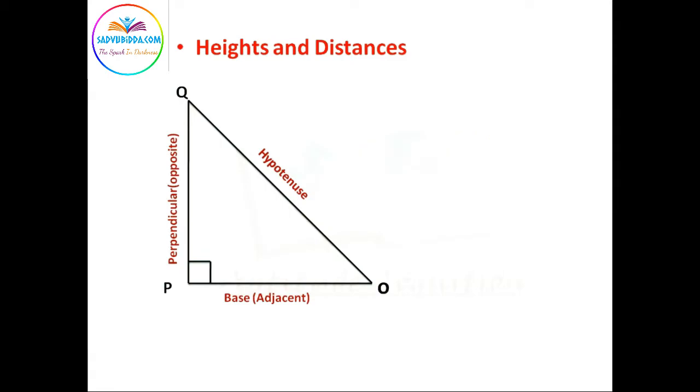Let us consider OPQ be a triangle with an angle theta. In a right angle triangle, angle QOP equals theta. Sine theta equals opposite side by hypotenuse.